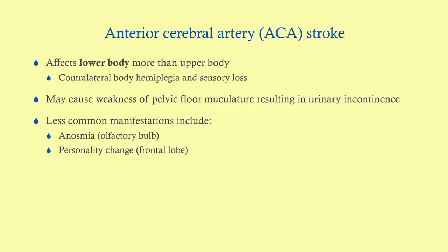The anterior cerebral artery supplies the part of the brain corresponding to the lower extremity, so ACA stroke affects the lower body more than the upper body. The most salient feature is leg paresis — these patients can't walk, whereas MCA patients have the classic facial drooping. ACA stroke can also cause weakness of the pelvic floor musculature, resulting in urinary incontinence — so a weak leg and a weak bladder suggests ACA stroke. It can also affect the olfactory bulb causing anosmia, and the frontal lobe causing personality change.